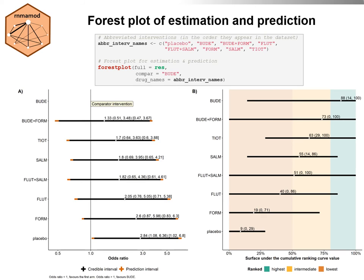In plot A, the 95% credible intervals shown as black lines overlay with the 95% prediction intervals shown as orange lines. In both plots, the interventions on the y-axis are sorted from best to worst based on the SUCRA value, found in plot B.